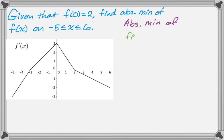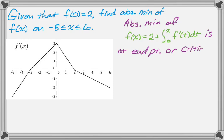So the absolute minimum of f of x, I'm going to write it as an accumulation function. So f of x is 2 plus the integral from 0 to x of f prime of t dt. So that's going to have to happen at an end point or at a critical point. So I like to write that down. Now I need to know the critical points. So you can actually just look at the graph of f prime to find the critical points. So f prime of x equals 0 at either x equals negative 3 or x equals 2. So those are our critical points.